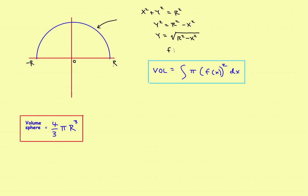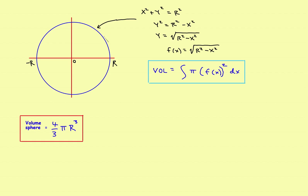So f of x equals the square root of r squared minus x squared. That's actually the hard part of the problem. If you take this semicircle and rotate it around the axis, it sweeps out a sphere.